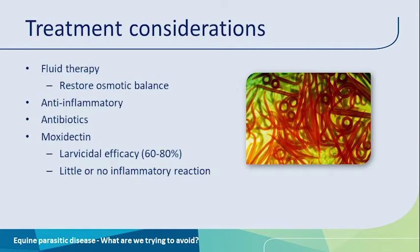Once you have a condition of acute larval cyathostominosis with diarrhea, horses are severely dehydrated, and fluid therapy is really the most important thing to do. It's an uphill battle to just keep up with the level of diarrhea in these animals — it can be very difficult to rehydrate them. They are also losing protein significantly, so restoring the osmotic balance is of utmost importance, and plasma expanders can be used for that.